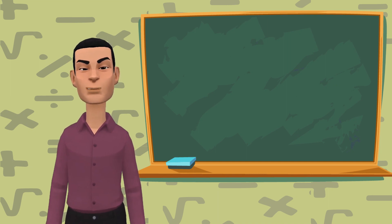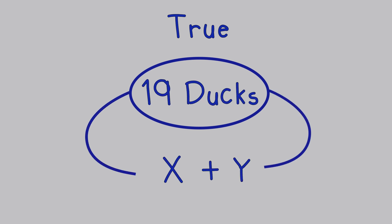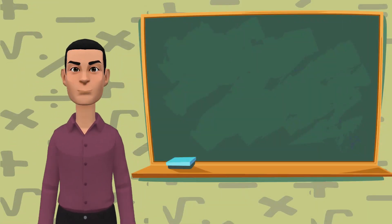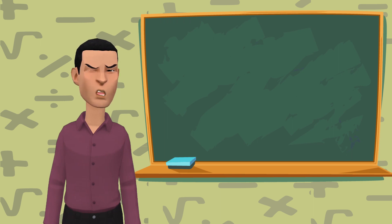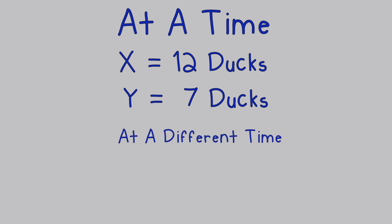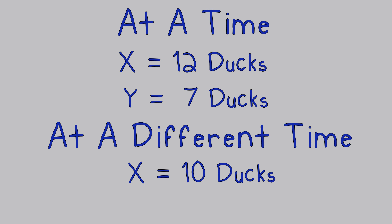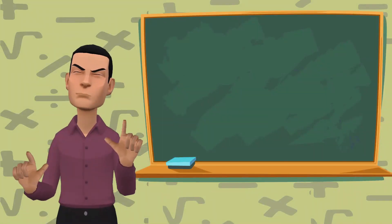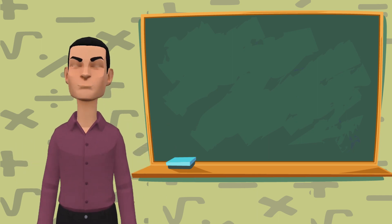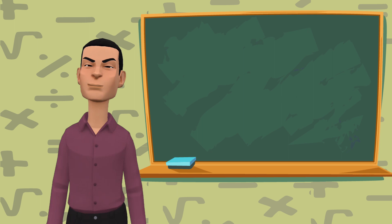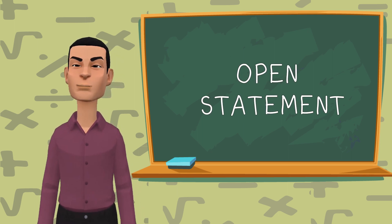In mathematics, the two statements are represented like this: X plus Y equals 19. This means that the only thing that's true in both statements is that there are 19 ducks between persons X and Y. But we cannot say if one statement is true and the other is false or vice versa, because at the time X had 12 ducks, and Y had seven ducks. At a different time, X had 10 ducks and Y had nine. One other thing that sticks out is that both statements cannot be true at the same time or false at the same time, which makes them open statements.